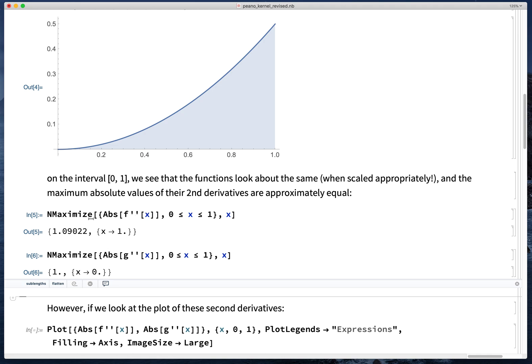So just to note, NMaximize runs a numerical optimization procedure on this function in this region with respect to this variable, and this tells you that it found the maximum value for f'' at x equals zero.